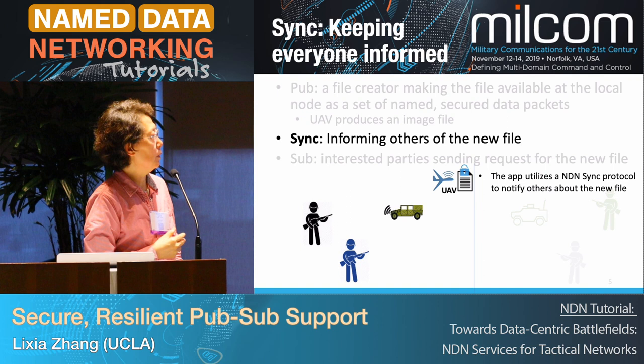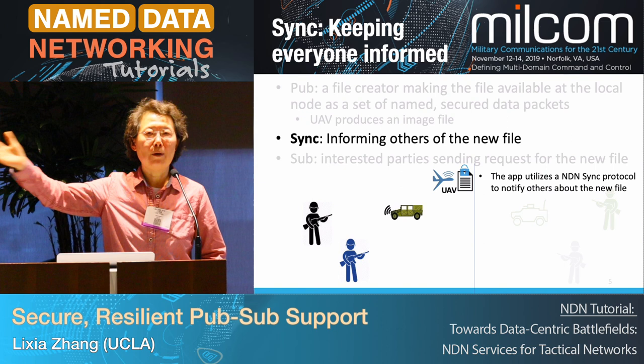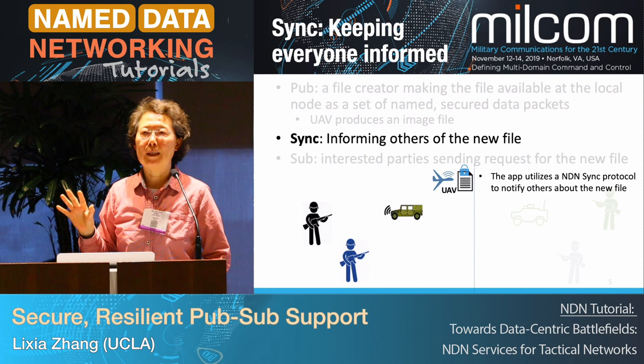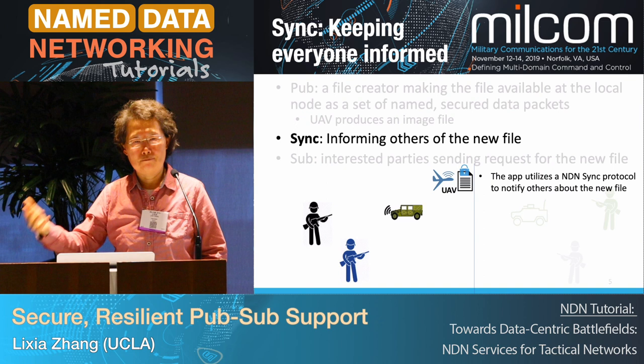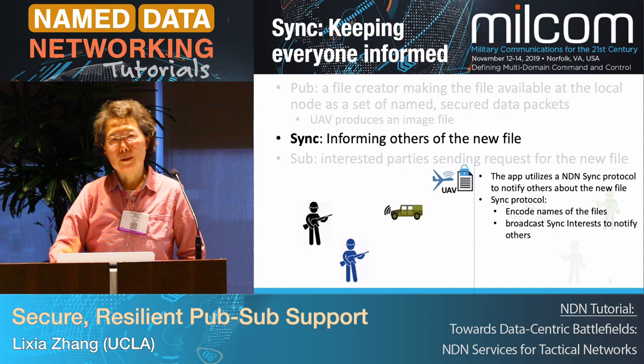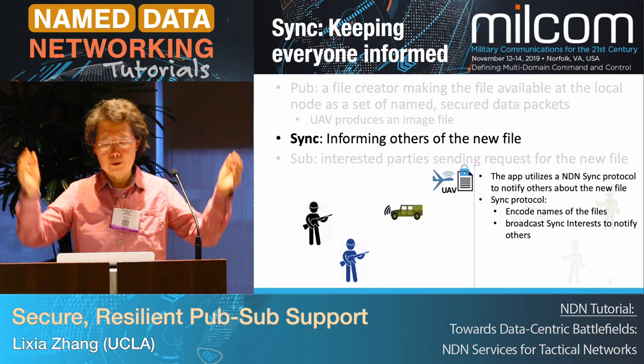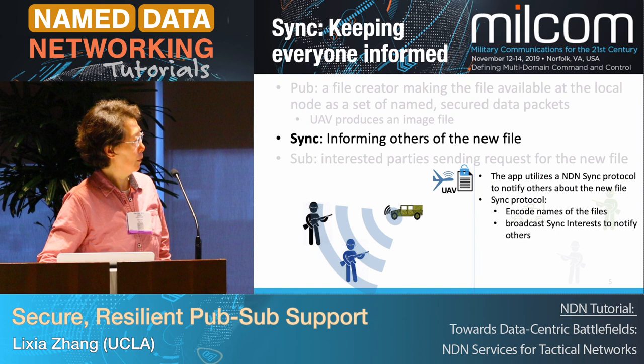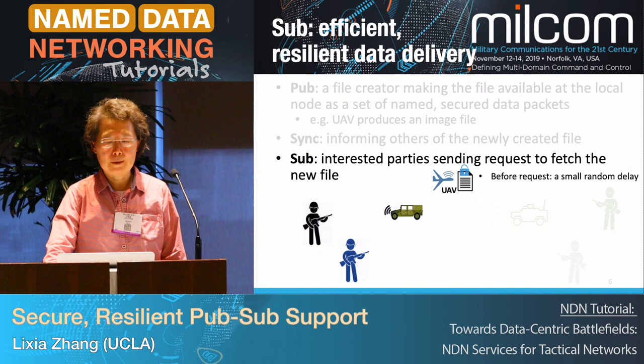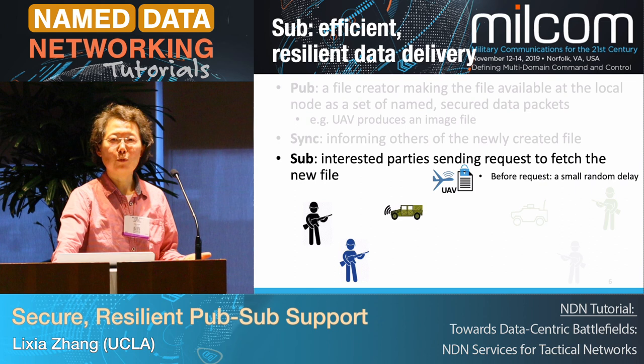The middle part — the sync — essentially has the job of telling everyone when new data gets produced. It can also tell others what existing data is there, so that late-comers can know what data is available and fetch whatever is needed. The sync protocol needs a compact representation of the names of all the data available, then you broadcast it out. A vehicle in the middle can relay this broadcast to let end users know about it. Subscribers, based on their local need, decide whether they want the file and send a request if so.